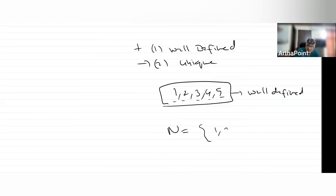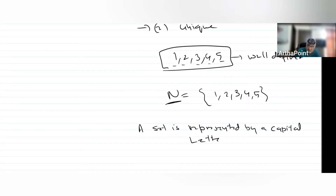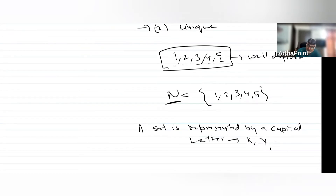Right now I am representing it as 1, 2, 3, 4, 5. What we have seen is that a capital letter represents a set. So a set is represented by a capital letter — any capital letter. It could be X, Y, Z, A, D — whatever capital letter you can use. A set is represented by a capital letter.